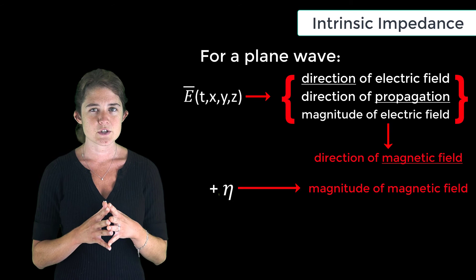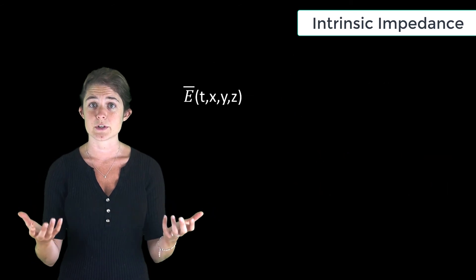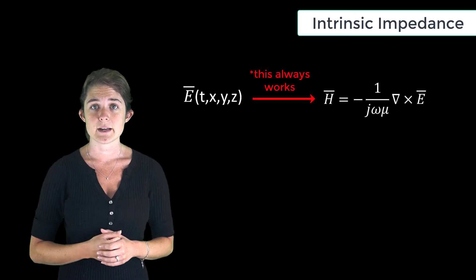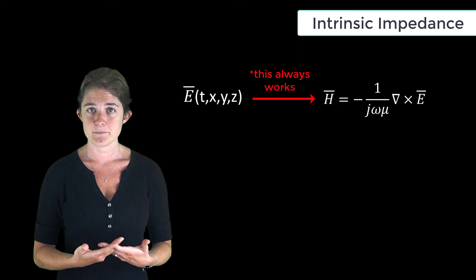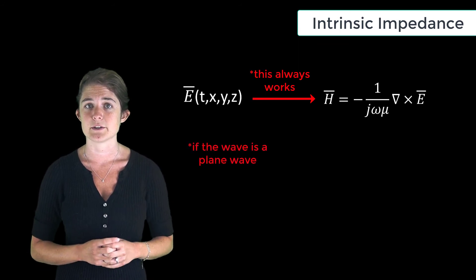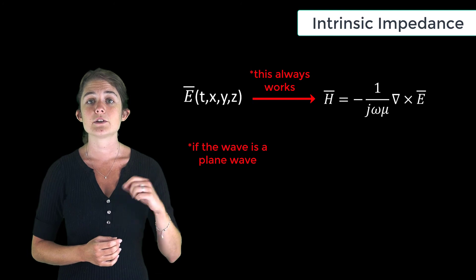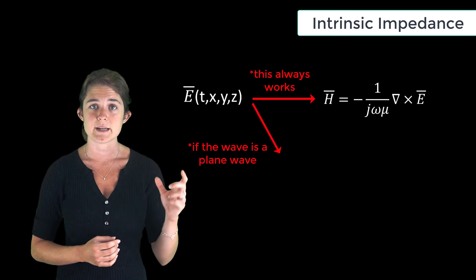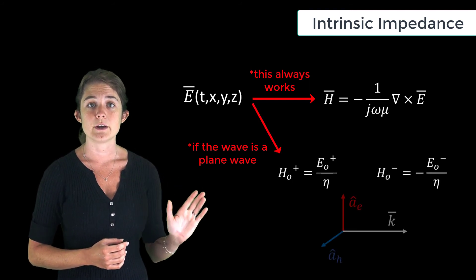Of course, whenever you know the electric field in a source-free region, you can use Faraday's law to find the magnetic field. But now, if we know that the electric field corresponds to a plane wave, we can also directly write the magnetic field by scaling the magnitude and reorienting the field.